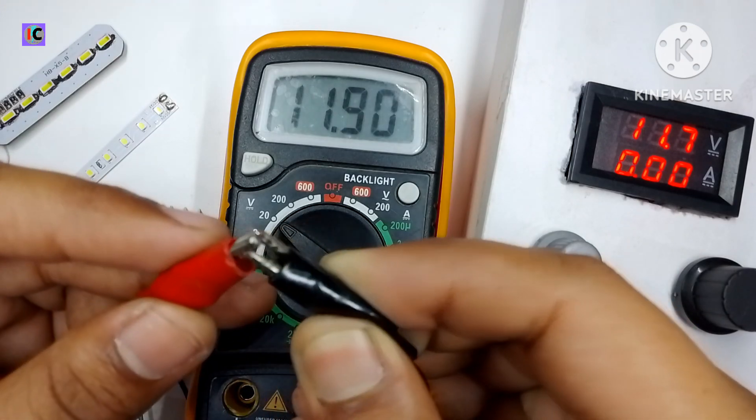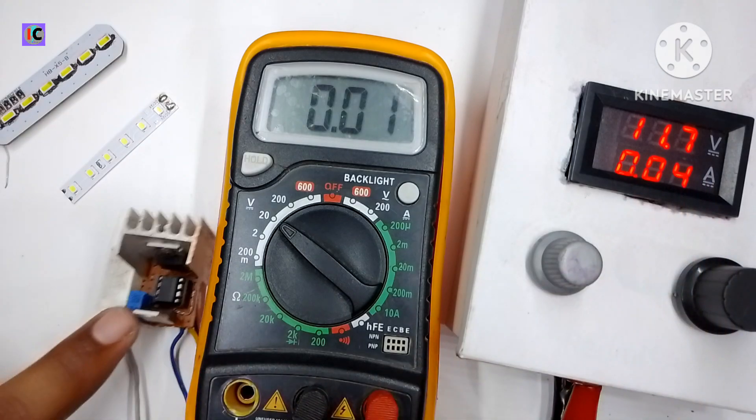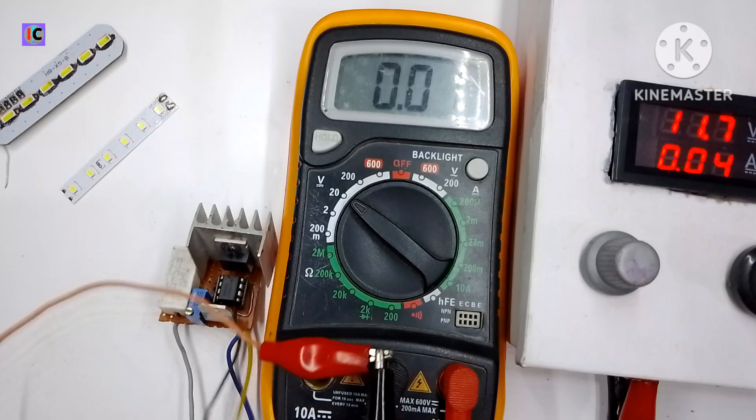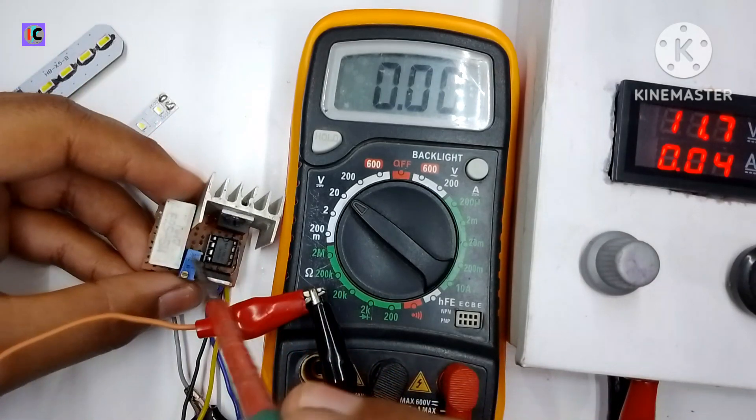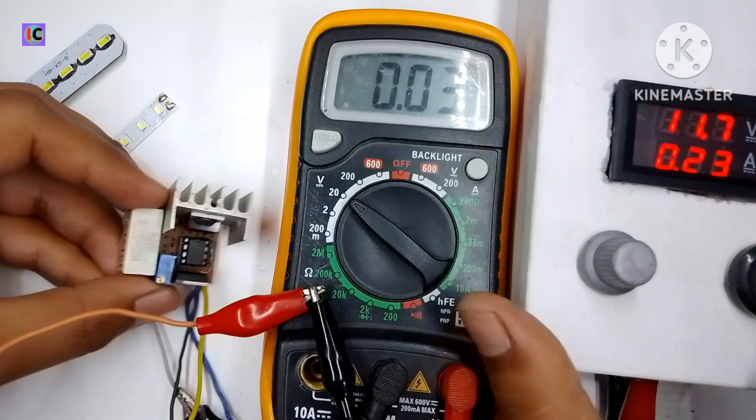Here I have connected this circuit to my power supply and also have connected a multimeter at the output of my current limiter circuit. I have shorted the output probes of my circuit and you can see...